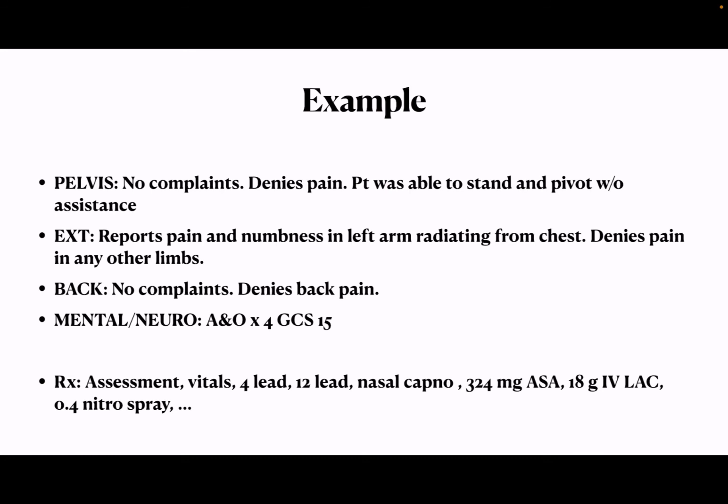Moving down, next is your treatment section — your RX. On a chest pain call, or any call, we're going to have assessment and vitals — that's our bare minimum. Everybody gets an assessment, everybody gets vitals. Next we have four-lead, twelve-lead, nasal capnography, 324 milligrams of aspirin, 18-gauge IV left AC, 0.4 nitro spray — and we can go on. If you like to list, that's how I do it: left to right, chronological order. This is how it happened.